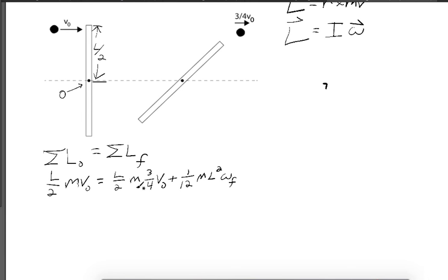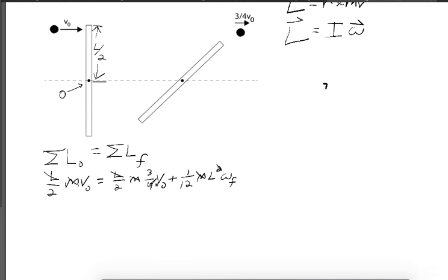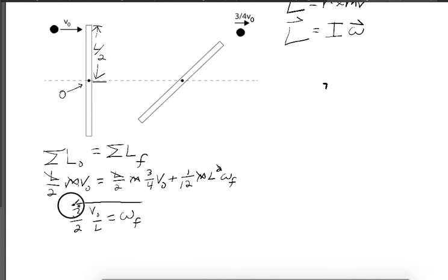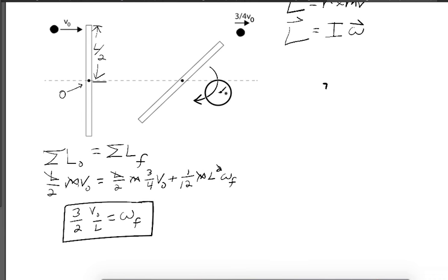Cleaning up mathematically, we have an L and an M in every term, so we can cancel them. Solving for omega_final, we end up with omega_final equal to (3/2)·v₀ / L. That's how fast the rod is rotating about its center of mass.